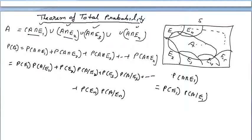Theorem on total probability: if E1, E2, E3 are the partition of the sample space, this is the whole sample space. Taking the partition means E1, E2, E3, E4, E5 and so on up to En, and nothing will be common between any two events — intersection of any two events will be phi.